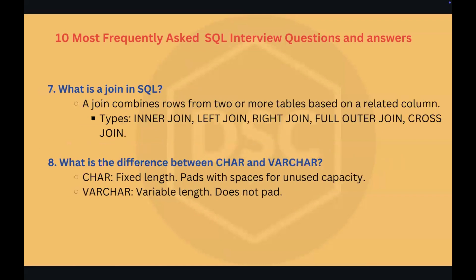Question number seven: what is a JOIN in SQL? A JOIN is used to combine rows from two or more tables based on a related column. It helps retrieve data that spans multiple tables. There are various types of joins: INNER JOIN, LEFT JOIN, RIGHT JOIN, FULL OUTER JOIN, and CROSS JOIN. We will look into all these types of joins later in our videos.